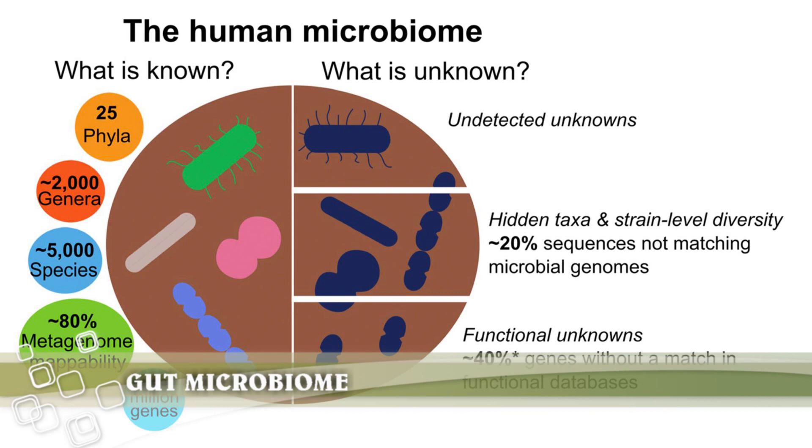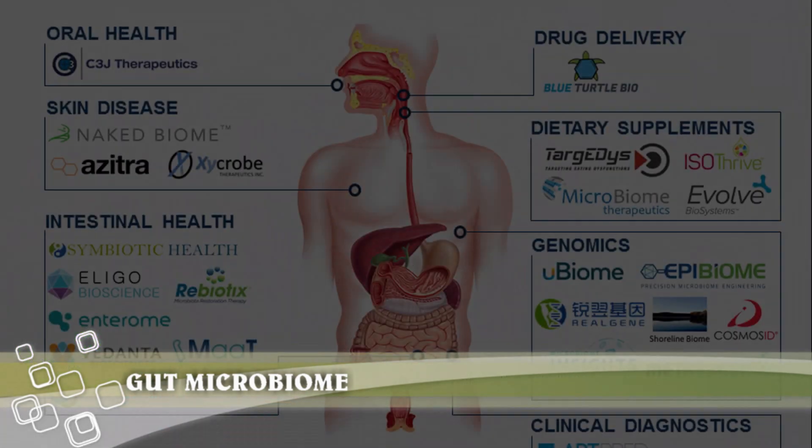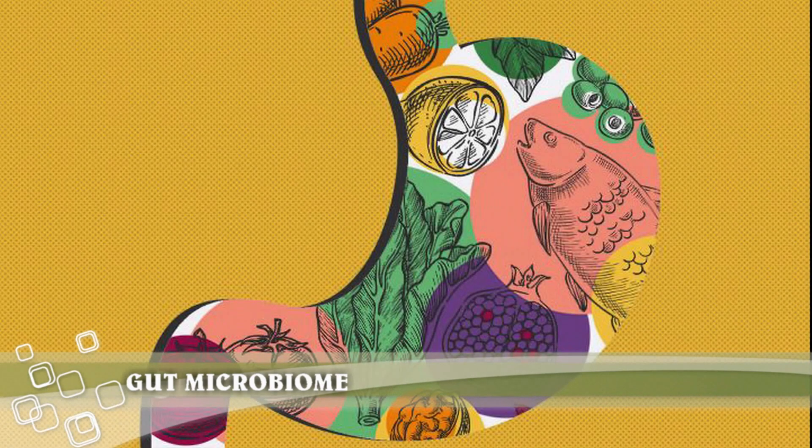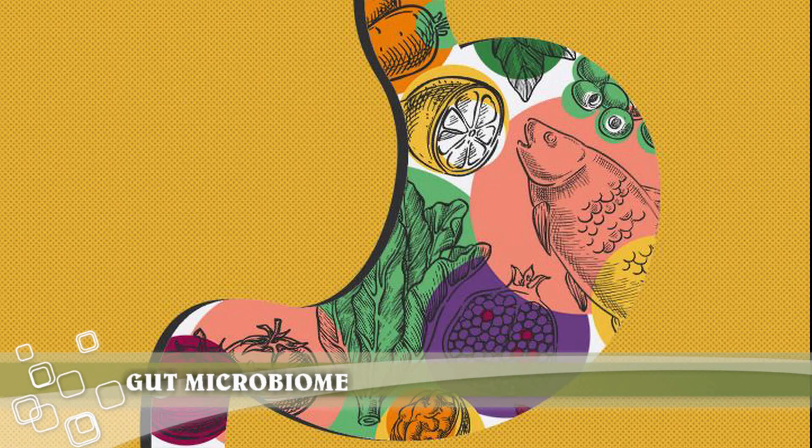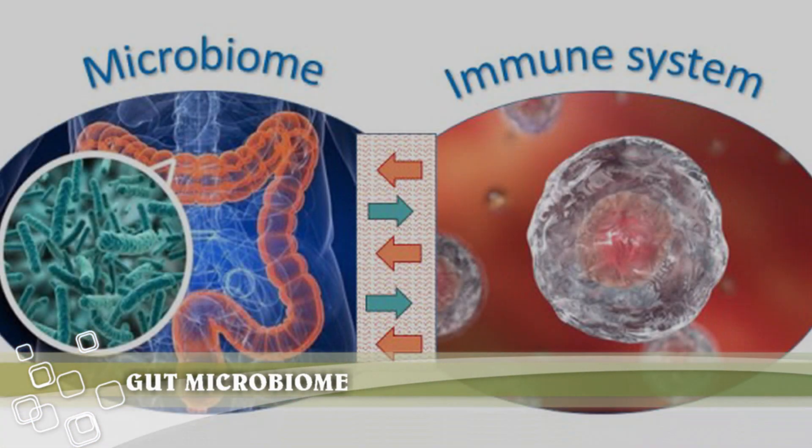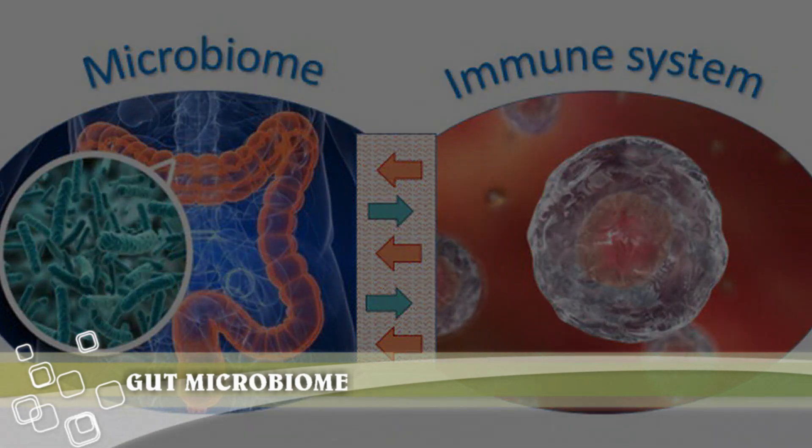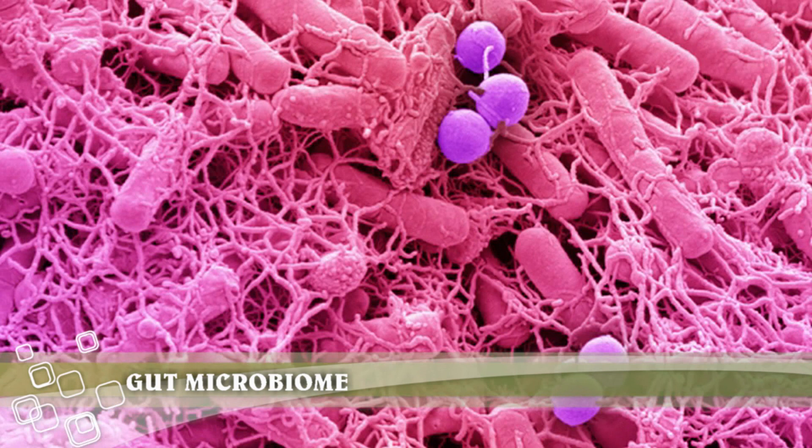The gut microbiome also controls how your immune system works. By communicating with immune cells, the gut microbiome can control how your body responds to infection. New research suggests that the gut microbiome may also affect the central nervous system, which controls brain function. Therefore, there are a number of different ways in which the gut microbiome can affect key bodily functions and influence your health.